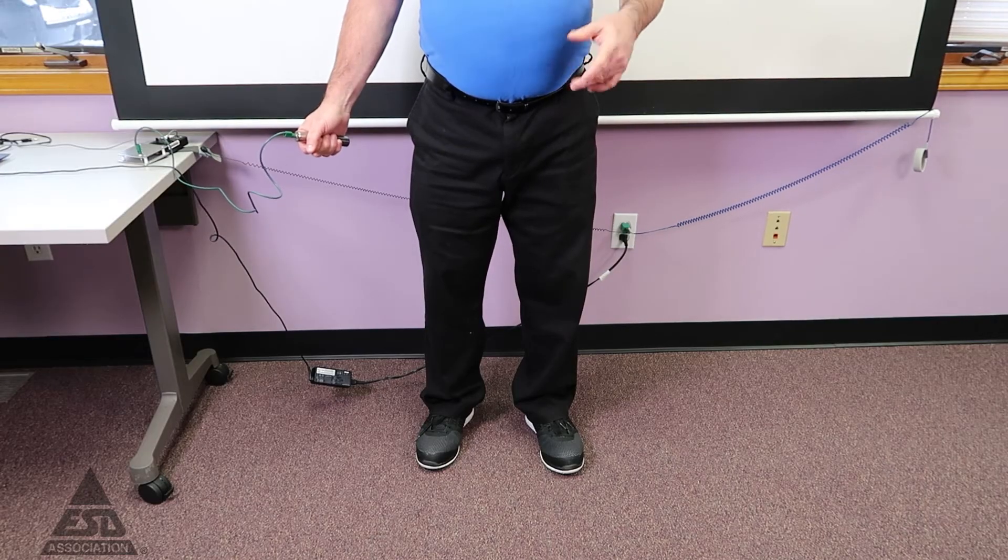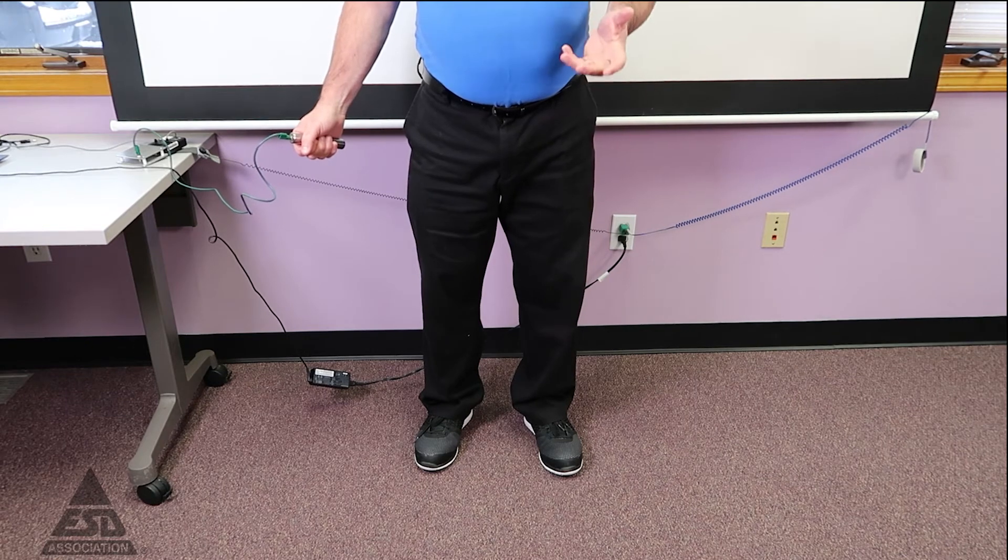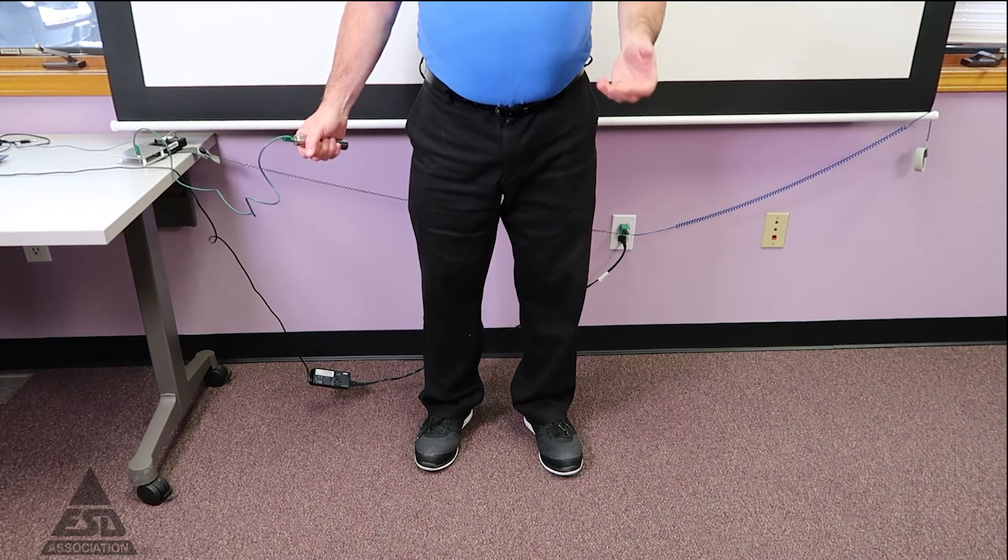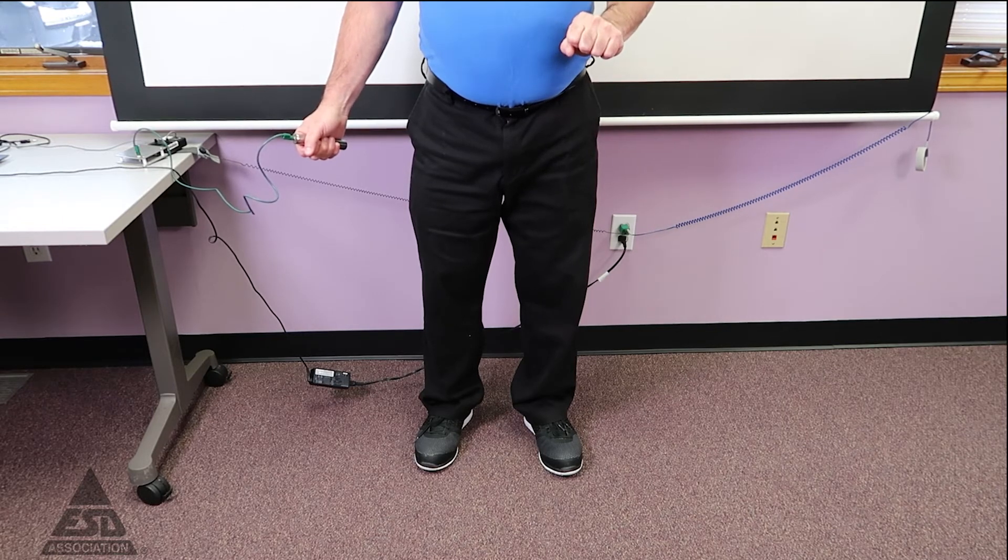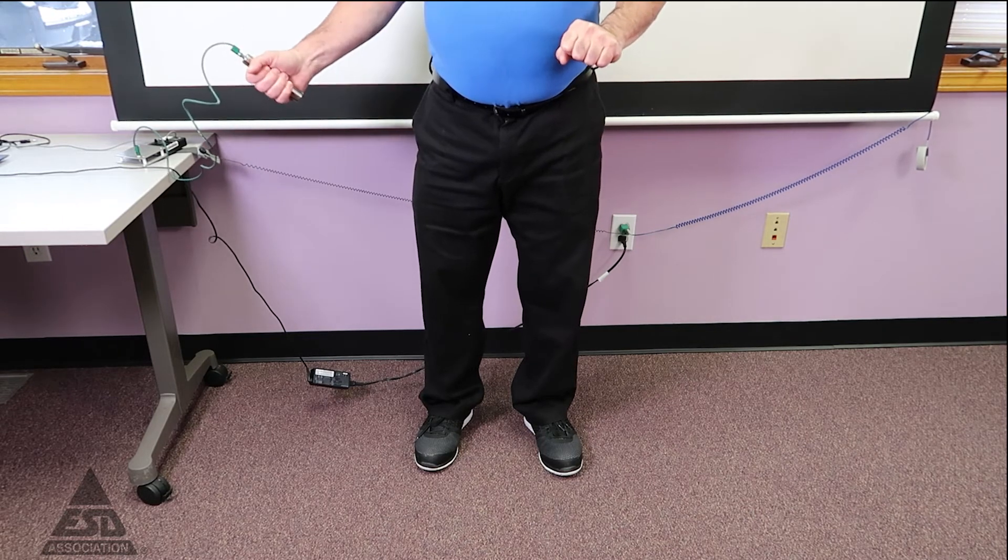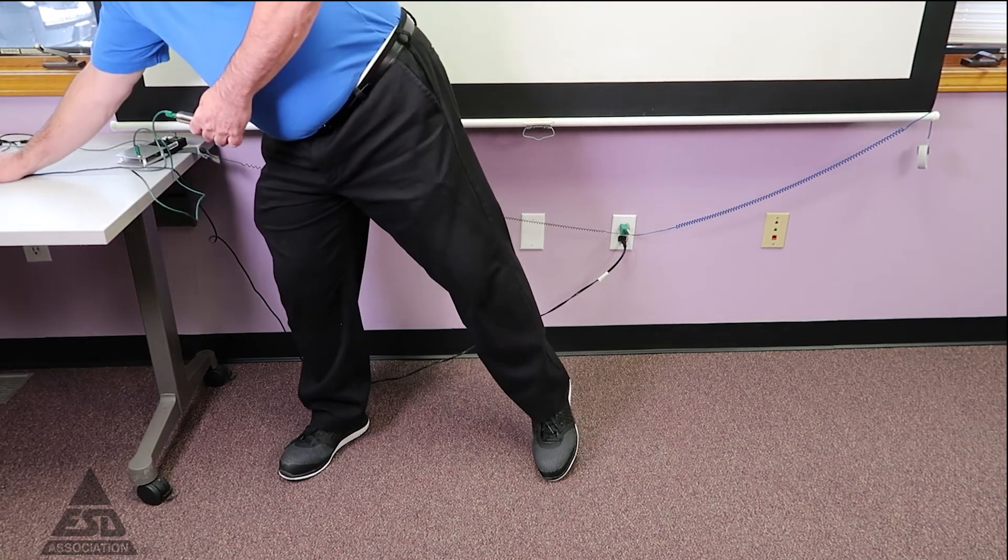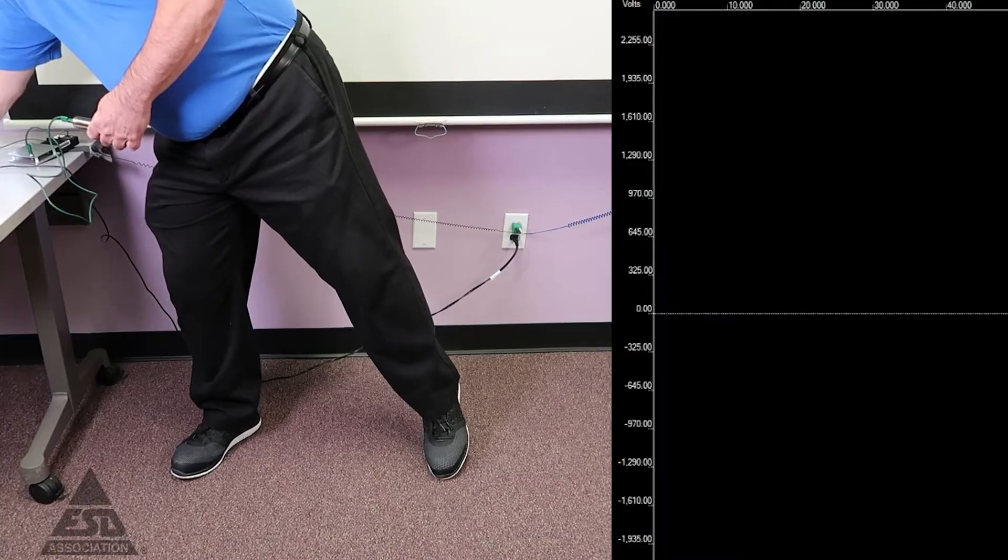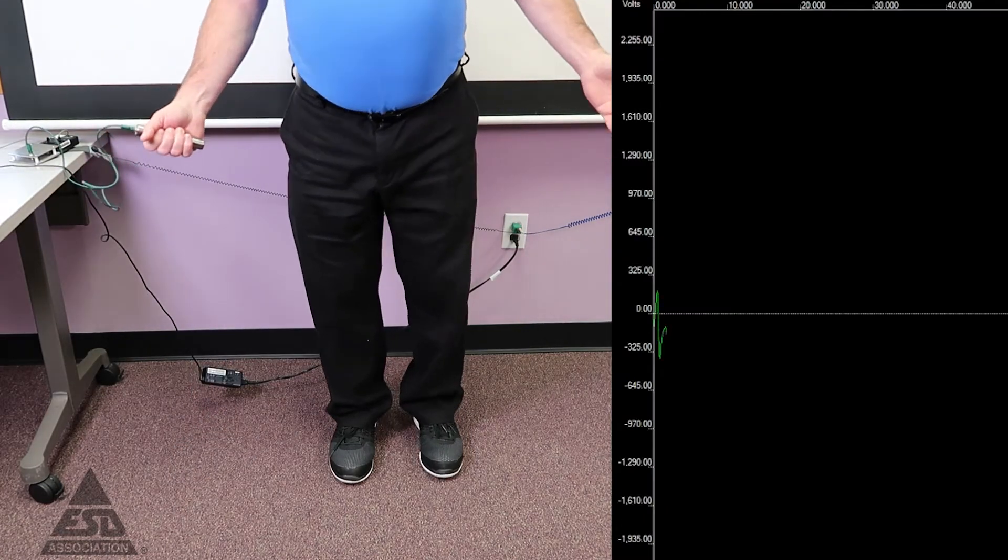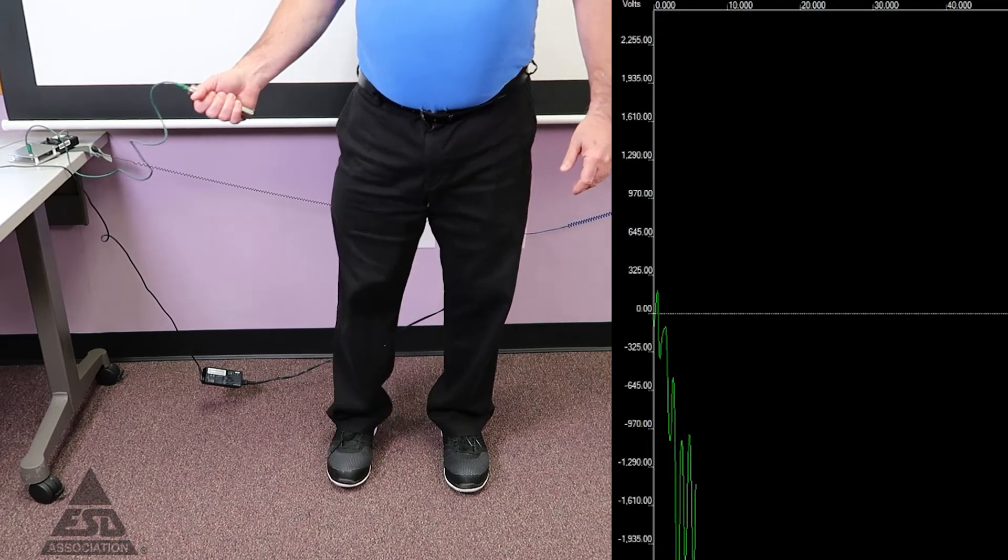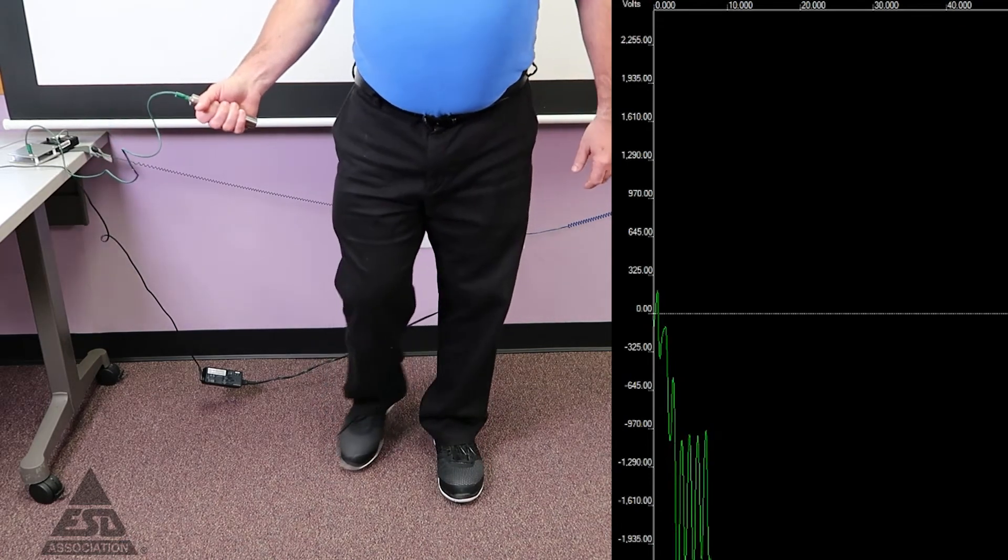Now we've done the testing for both the wrist straps and we're going to show the effectiveness of both the wrist strap system and the footwear flooring system. Right now, I'm going to show you the effectiveness of the wrist strap system. I have myself connected to a way to measure my body voltage. We started on an uncontrolled floor. You can see by simply just walking around, you create a lot of voltage on the body, which would not be good.